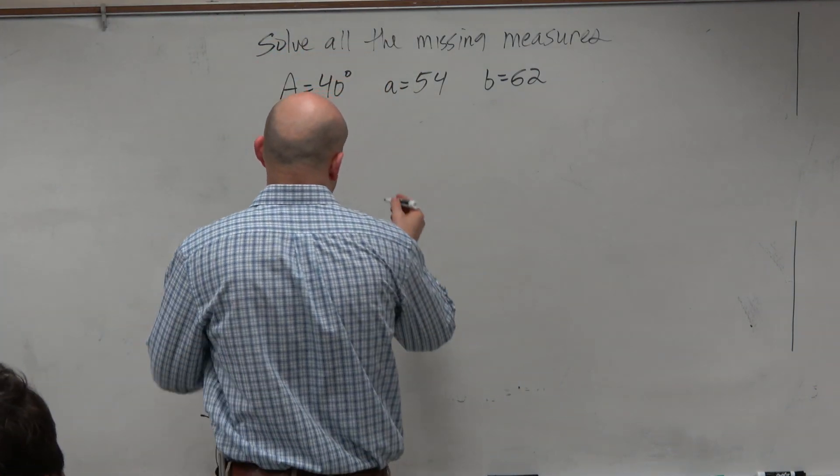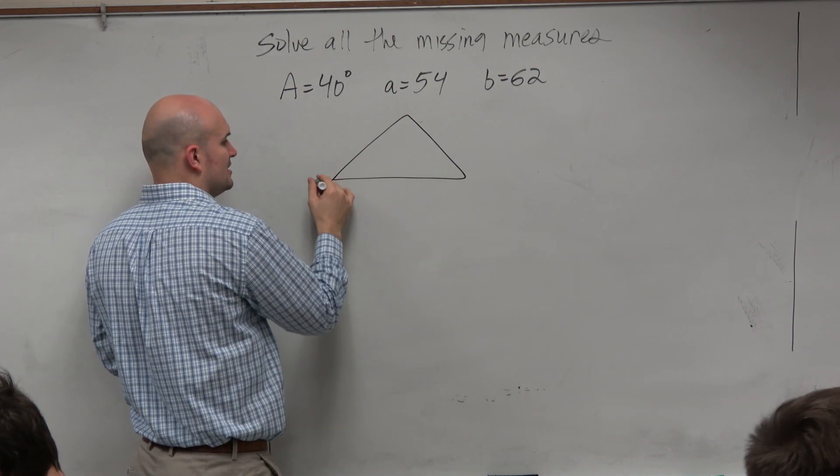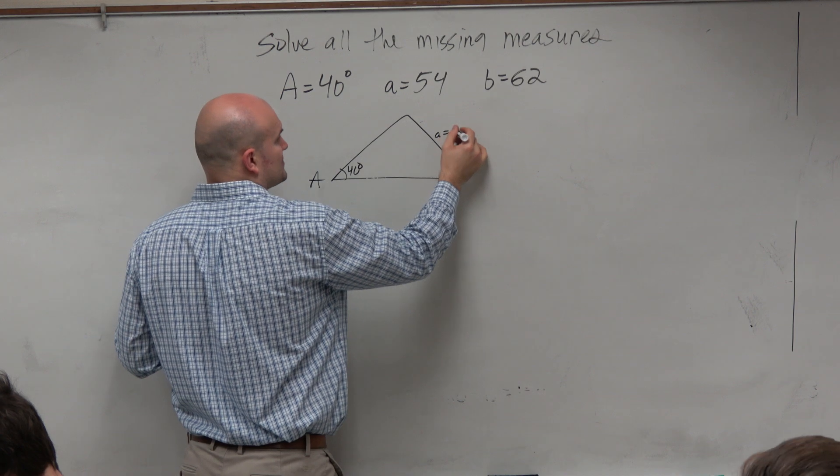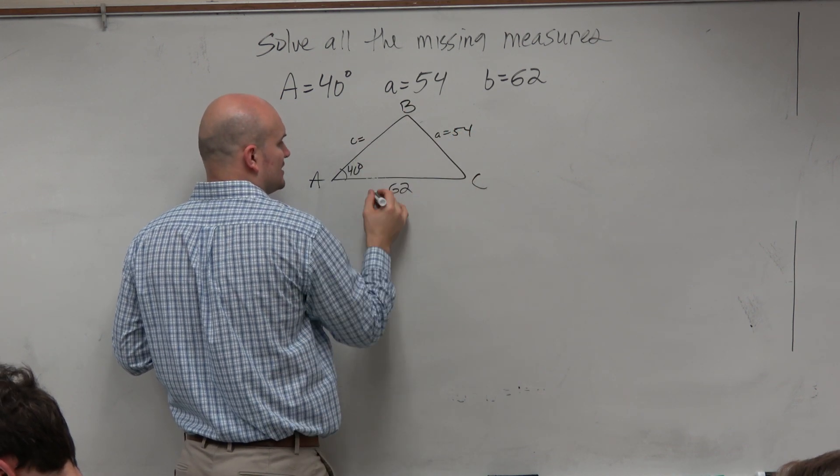Based on the information, the first thing you're going to want to do is draw a triangle. Many students go ahead and draw the triangle, put 40 degrees here, say A equals 54, put B here at 62.